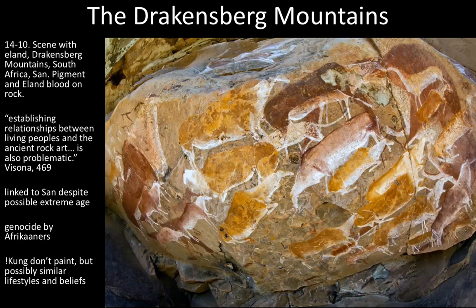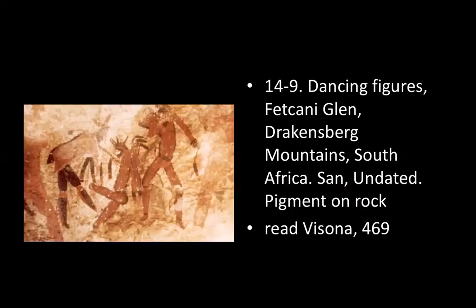The modern San peoples have different names for themselves. One is !Kung — the exclamation point at the beginning is pronounced with a click sound. They don't paint, but possibly have similar lifestyles and beliefs to the ancient artists, and there's really good reason to believe that as we'll kind of see. In this one we have dancing figures and it seems to be some kind of masquerade. Visona says the figures appear to be circling the walls in a healing dance, just as !Kung men and women dance today to cure an ailing person or to cleanse and rejuvenate a community.